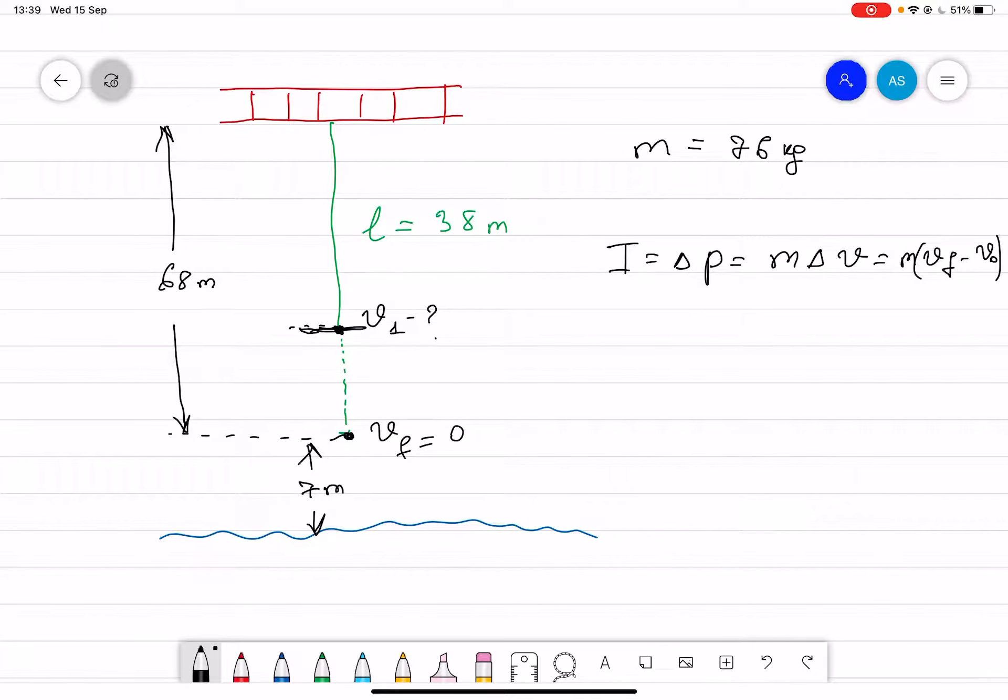So it's simply, you can use two ways: one is conservation of energy, the other one is just a kinematic equation where v final squared is equal to v initial squared plus 2gl. Initial is equal to zero, so from here the final is equal to square root of 2gl where...